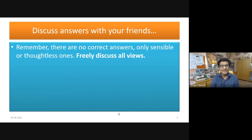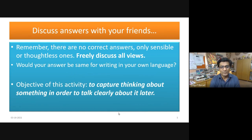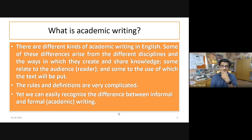This activity was designed to capture thinking about something in order to talk clearly about it later on. As we are in virtual mode, we are not doing the activity with partners. Coming down to defining academic writing — after looking at the set of processes, when we think of academic writing we find there are different kinds of academic writing in English, depending on your purpose and the academic context. Some differences arise from the different disciplines and the ways they create and share knowledge.